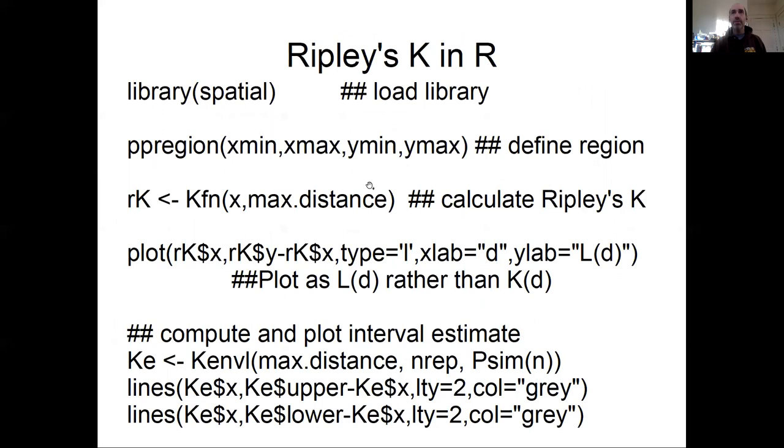Ripley's K is fairly straightforward to calculate in R using the spatial library. So I'm going to work through this code. So you load up the spatial library and the first thing you need to do is define a point pattern region. In this case, we're just defining it as a bounding box with a minimum and maximum in X direction and a minimum and maximum in the Y direction. So we're just defining a rectangle for point pattern region. And that is important for these functions to know to be able to do those area calculations.